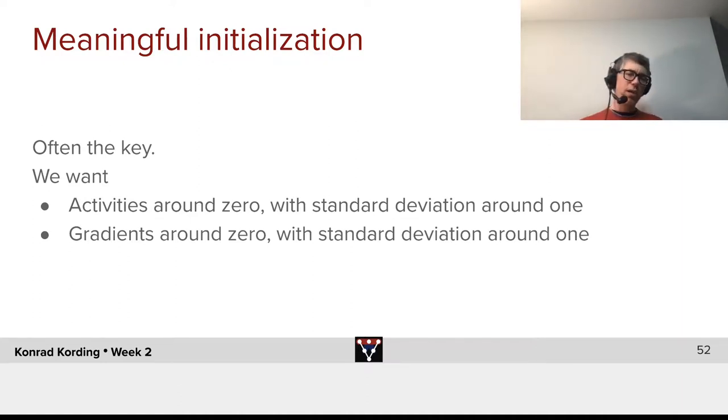We want gradients to be around zero and standard deviations, again, around one. Why? Because that's the scale for which our abstraction works well.